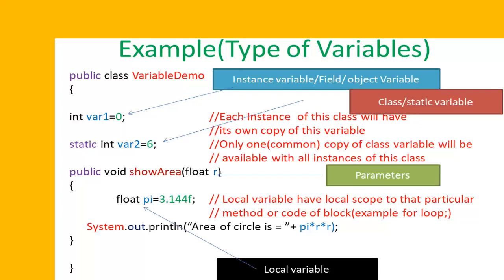The first type of variables are known as instance variables or fields for the object. For example, we have a variable var1. So each instance of the class VariableDemo will have its own unique copy of this variable.